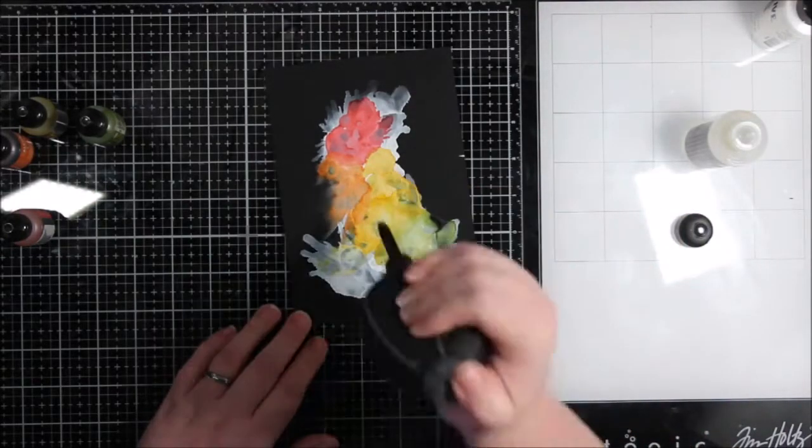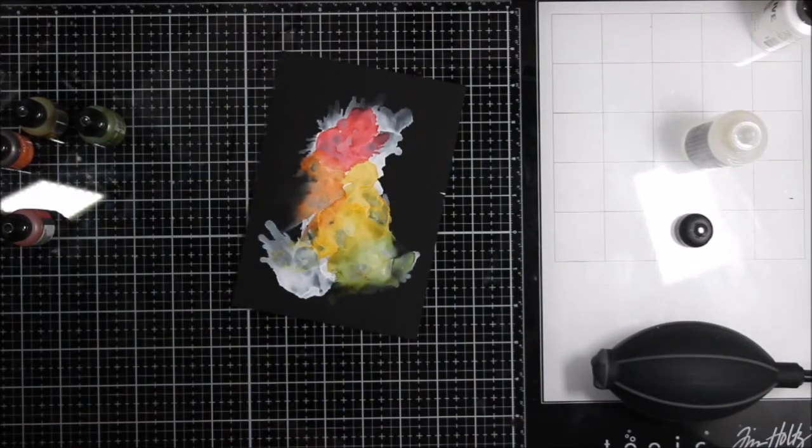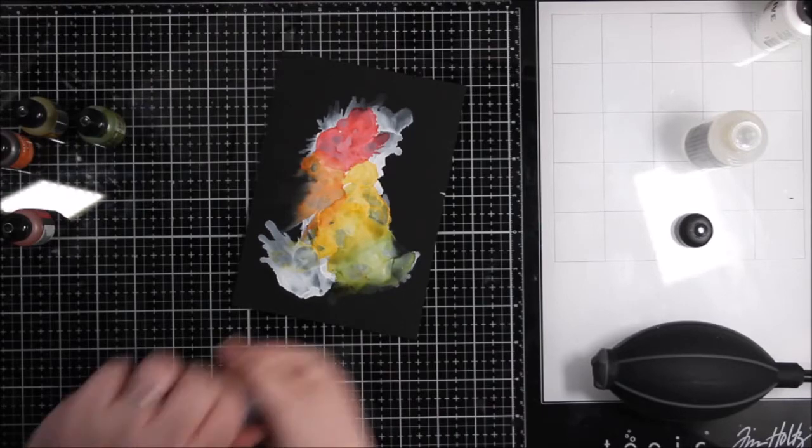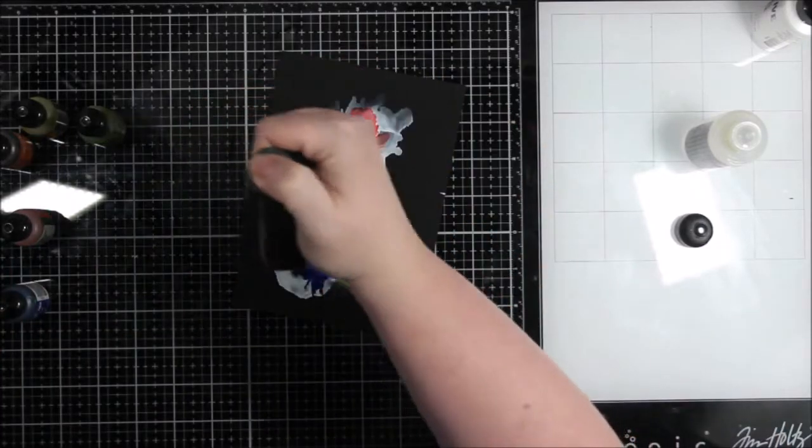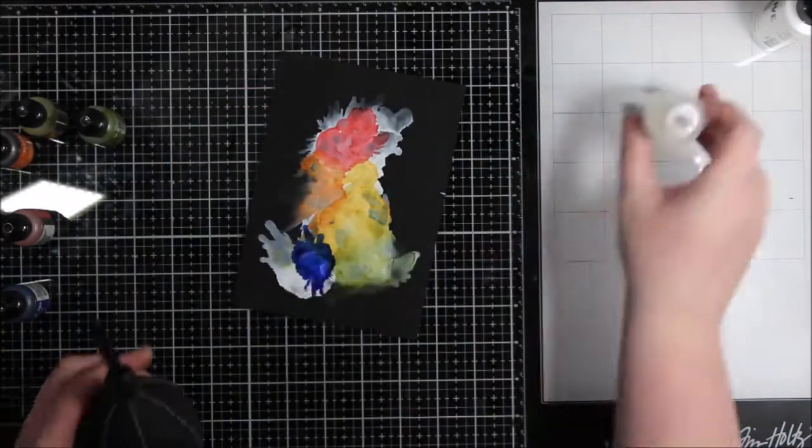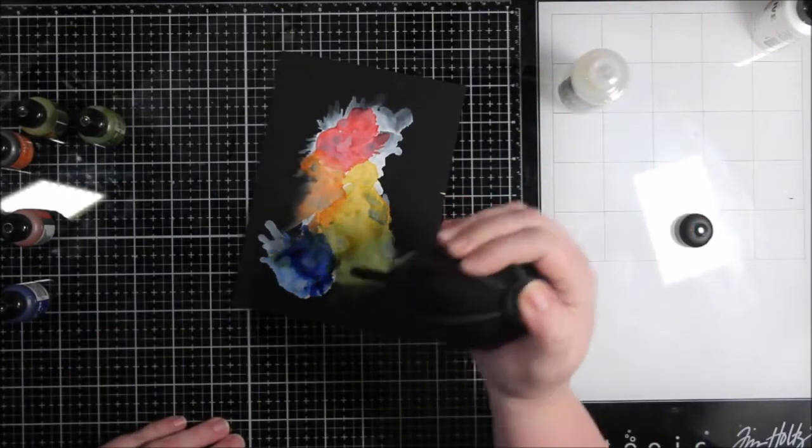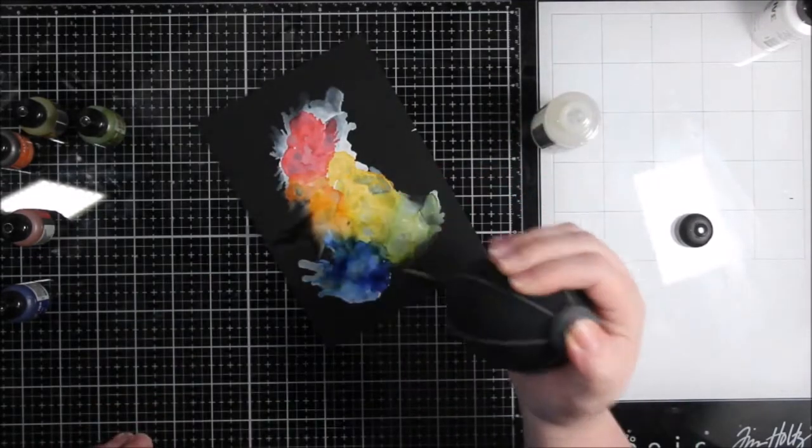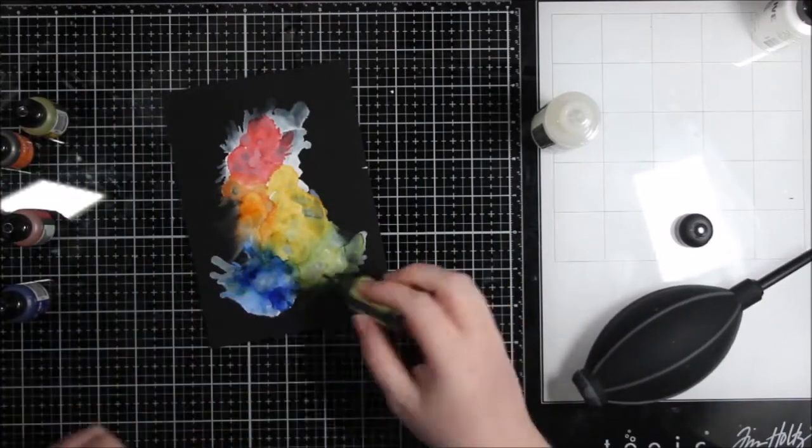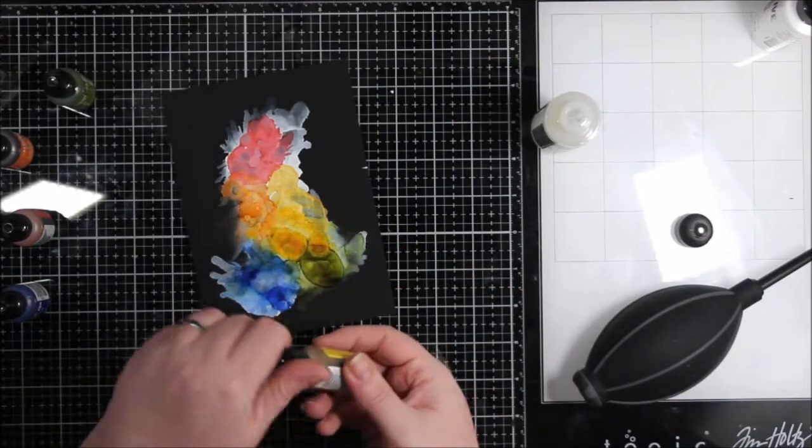So I'm using some rainbow alcohol ink colors. I have the coral, sunset orange, sunshine yellow, lettuce. And then I did pull out indigo. I don't have like a light blue. I guess I thought I did but I didn't. Anyway, I was adding these colors over top of the white, but leaving like some of that white poke through. But when I did that, I just didn't think that the colors were kind of vibrant enough.